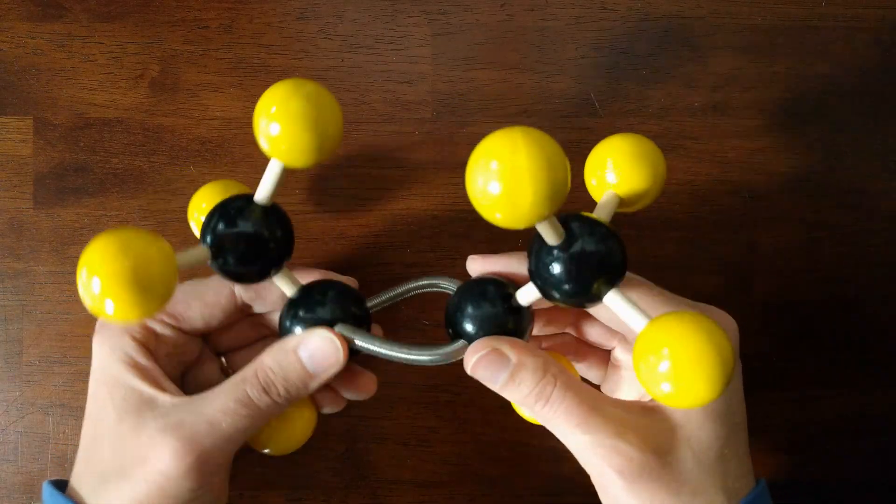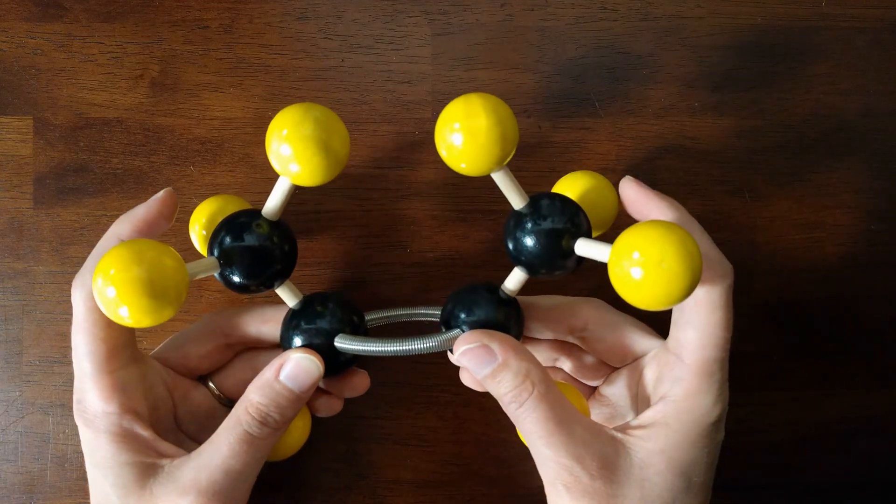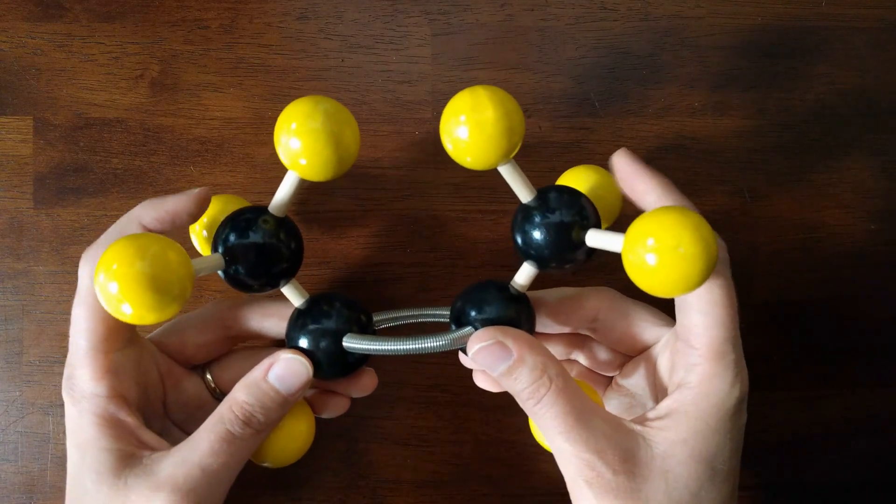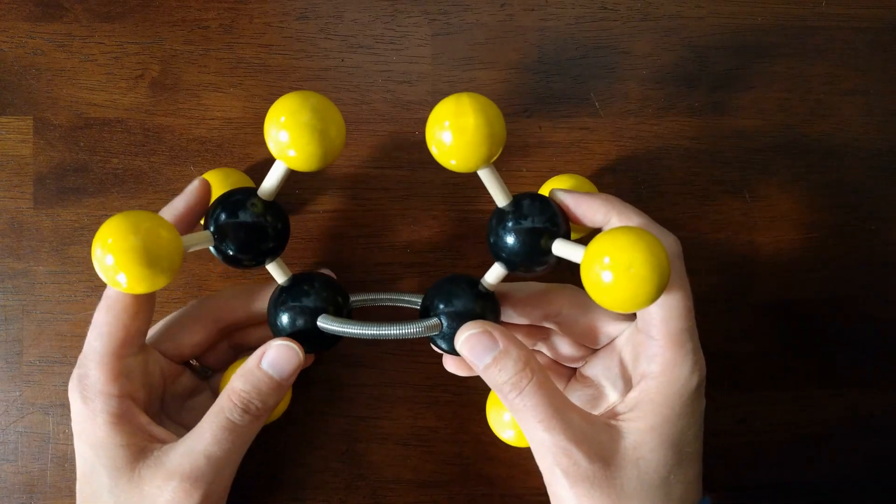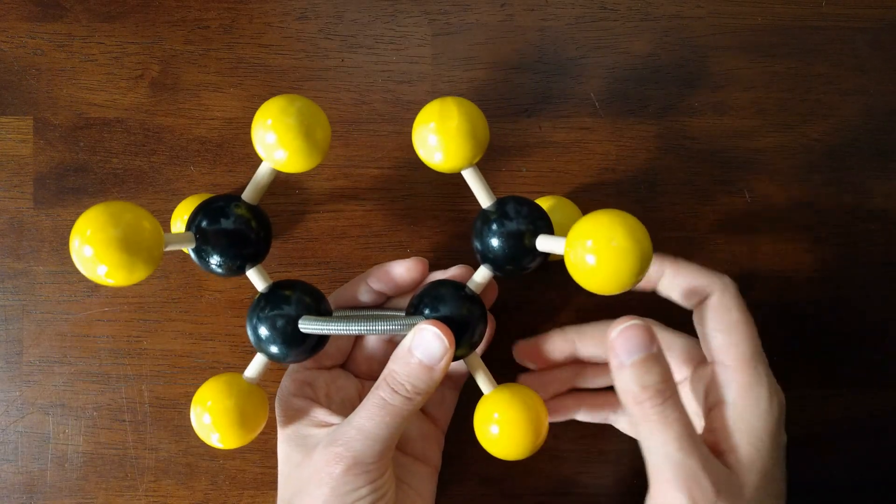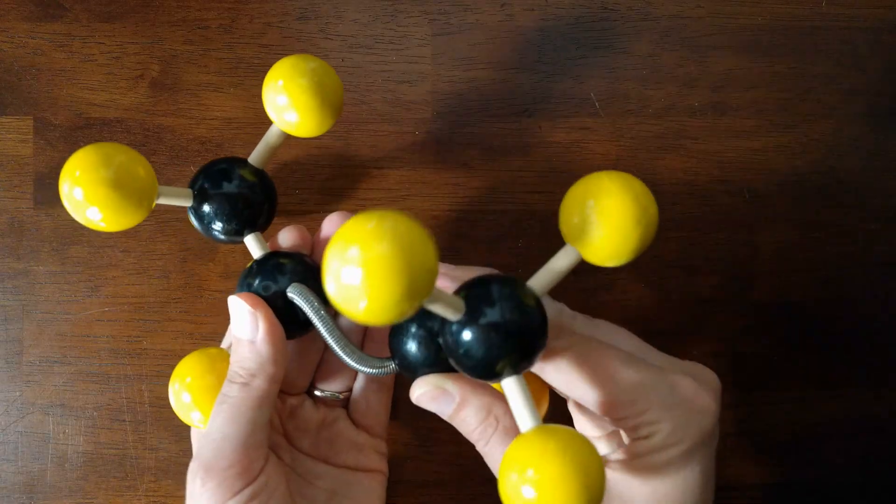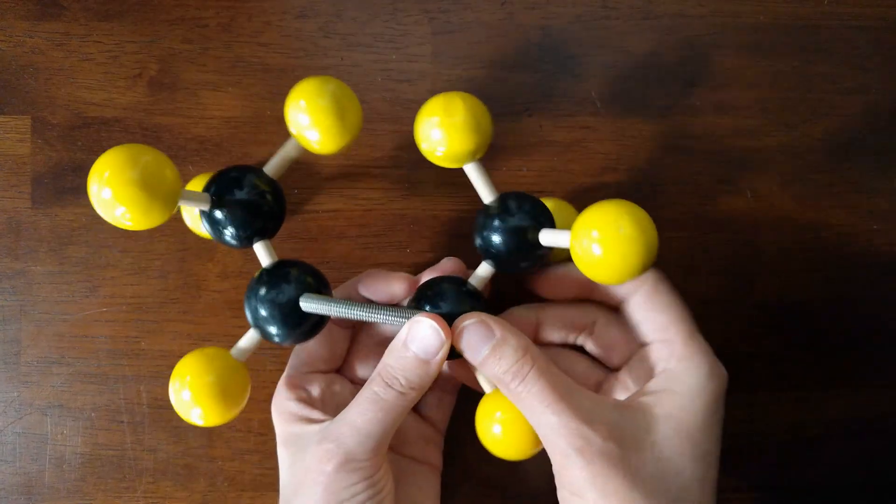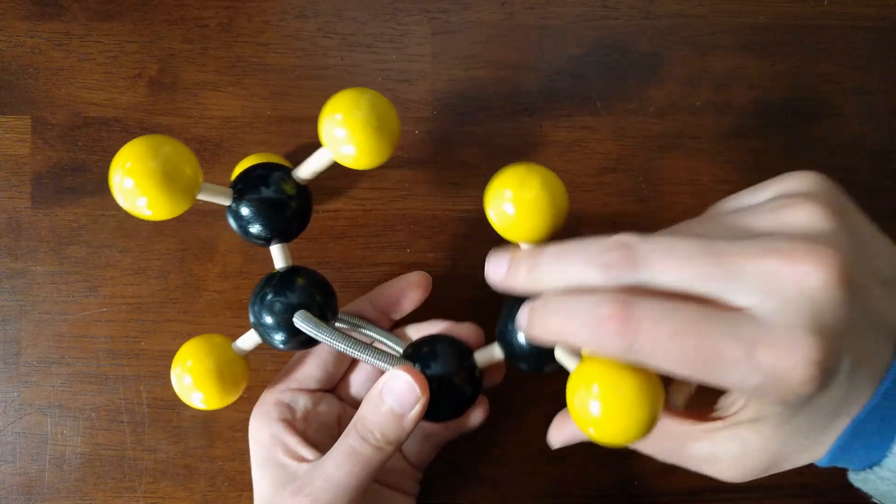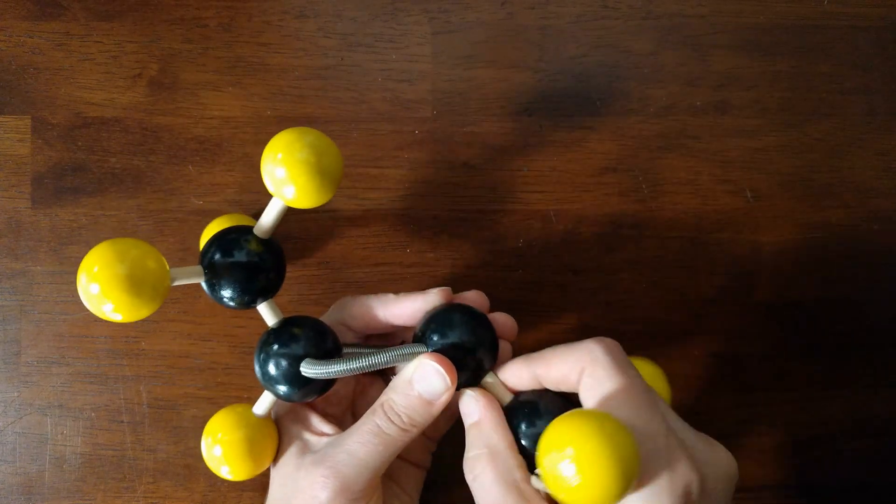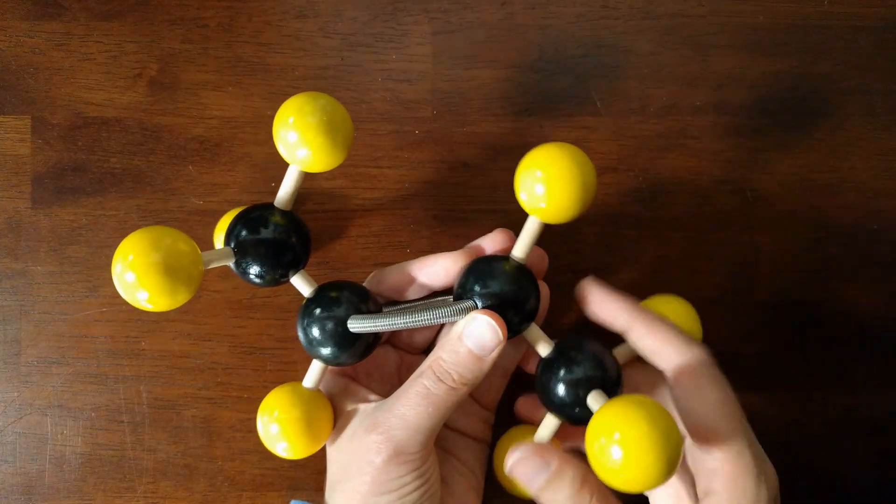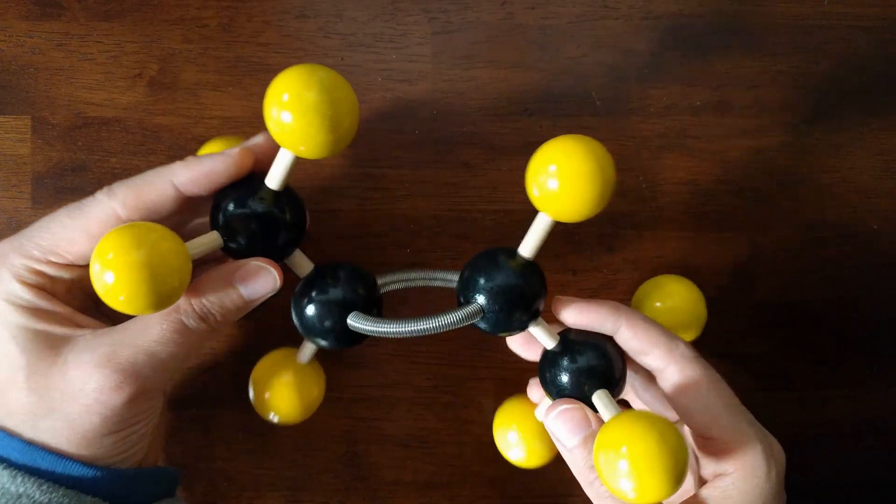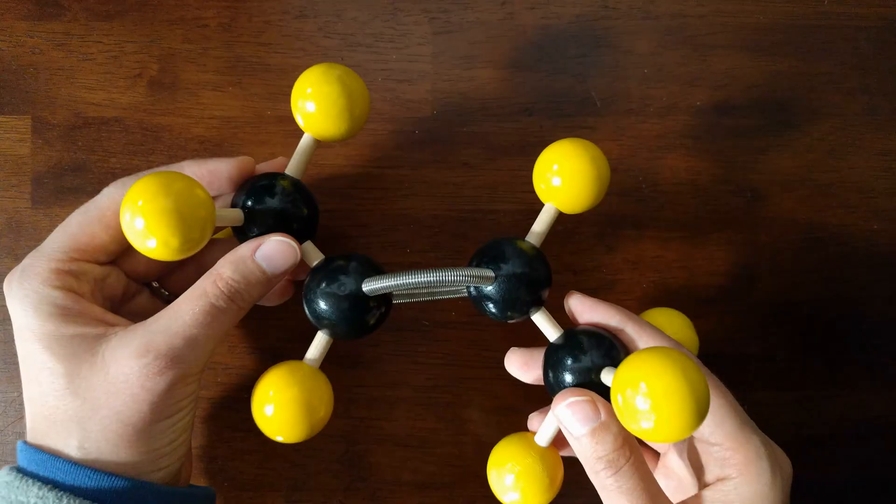But cis and trans-2-butene are isomers of each other. So in cis-2-butene, my two larger groups, my two CH3 groups, are both on the same side as the double bond. If I want to convert this to trans-2-butene, it's not a simple rotation. I need to physically take this molecular model apart and put it together differently.